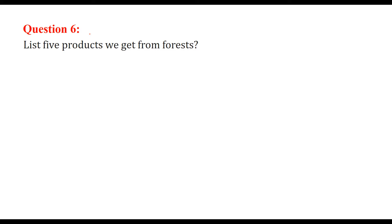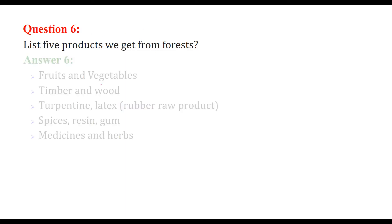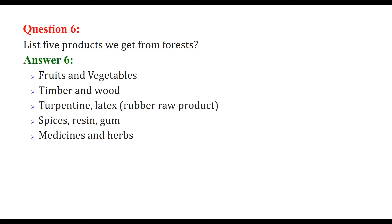List five products we get from forests: fruits and vegetables, timber and wood, turpentine and latex (raw rubber), spices, resin, gum, and medicines and herbs.